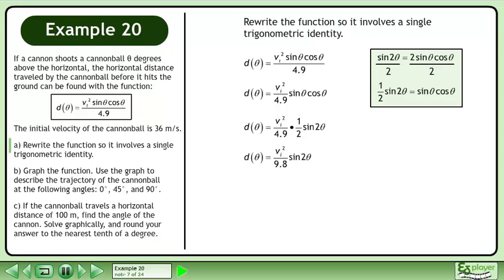Multiply the fractions. Recall from the question that the initial velocity is 36 meters per second. The answer is d of theta equals 1296 over 9.8 times sin 2 theta.